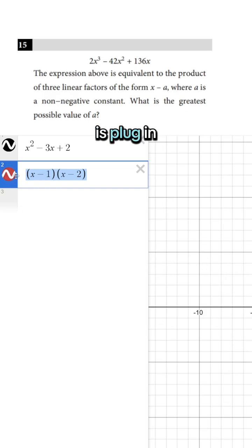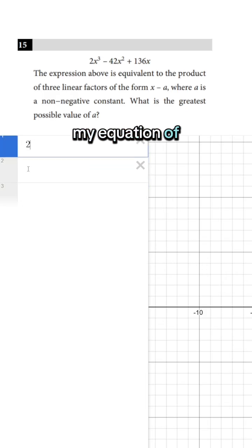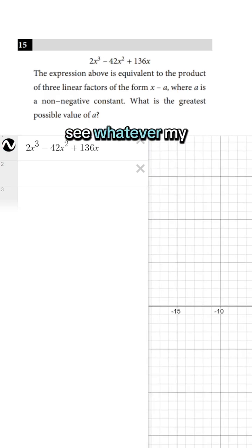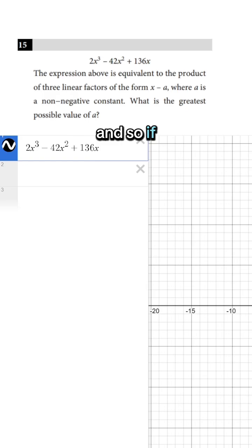So all I have to do is plug in my equation of 2x cubed minus 42x squared plus 136x and see whatever my zeros are. And so if we look here, my zeros are 0, 4, and 17.